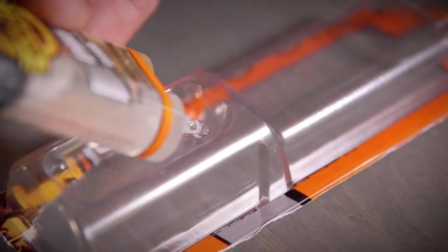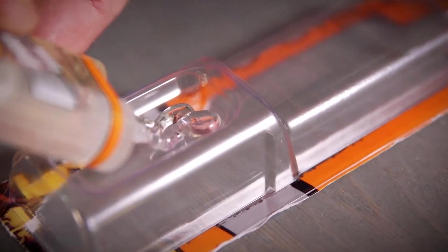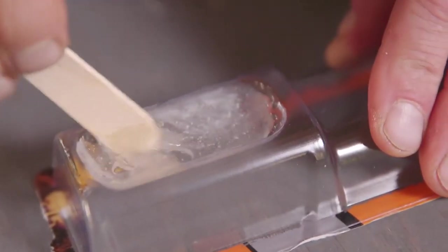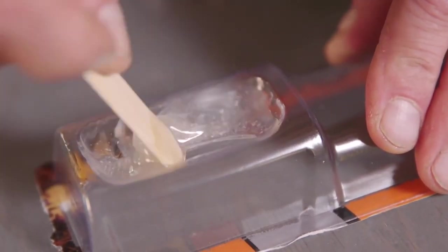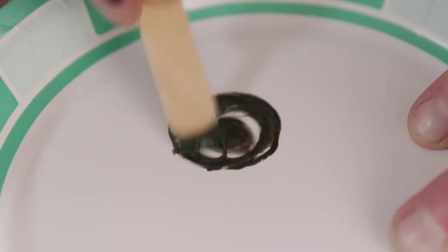Next, you will need a tray to mix the two parts. Gorilla Epoxy comes with a built-in tray, but you can also use other disposable household items, such as a paper plate or the bottom of a soda can.